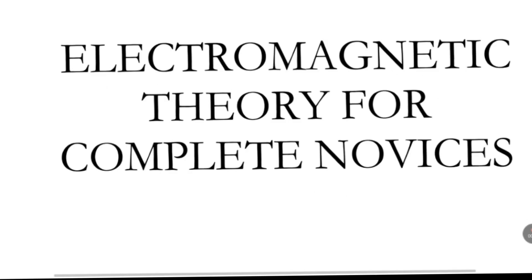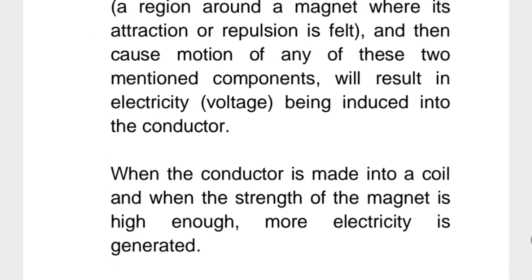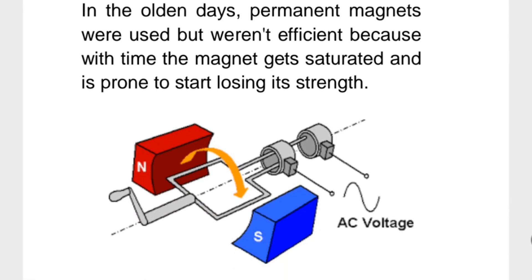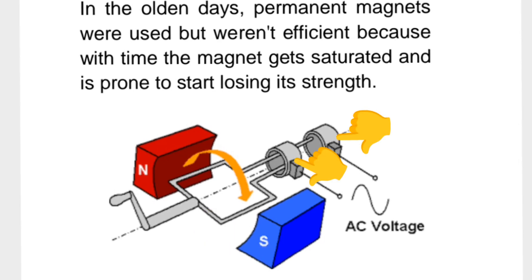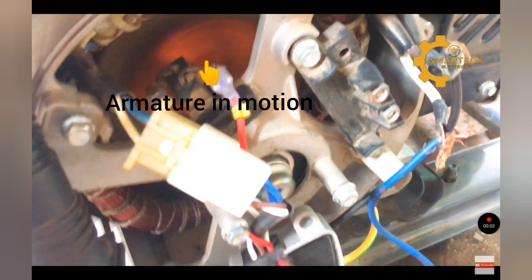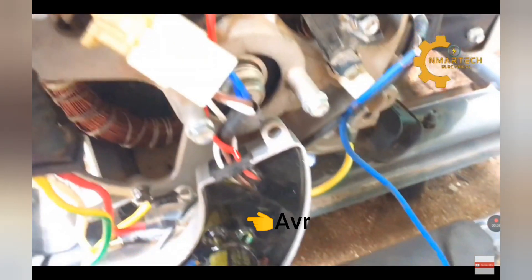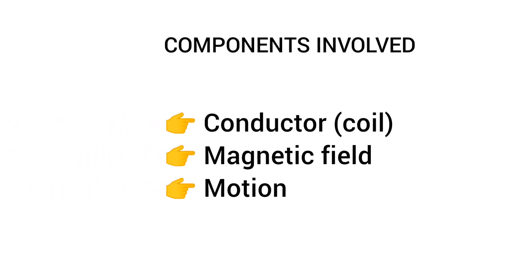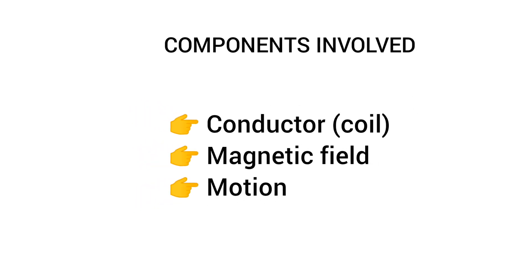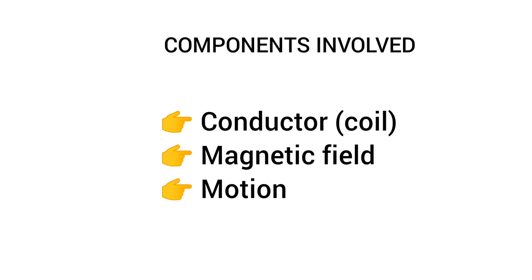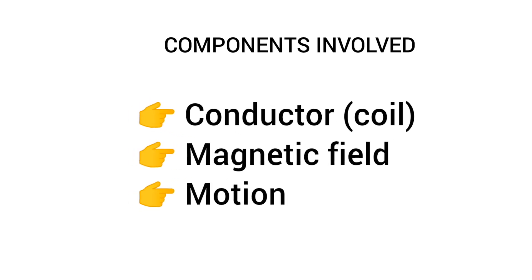Let's look at what happens in the olden days when generators are made with permanent magnets, a moving conductor, and a slip ring — and then in new generation generators, where you have an armature, a stator, an AVR system, and brushes. There are three vital components: conductor, magnetic field, and motion. You must have conductors, you must have a magnetic field, and there must be motion — these three must come into play before alternating electricity is realized.